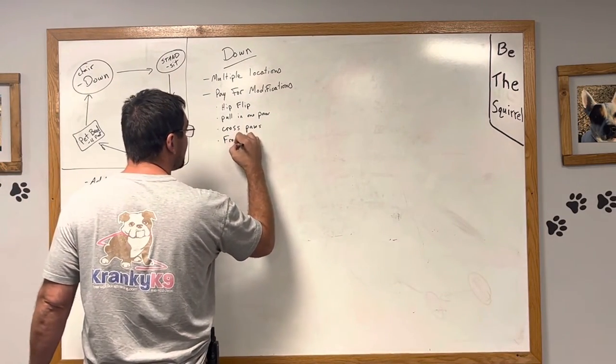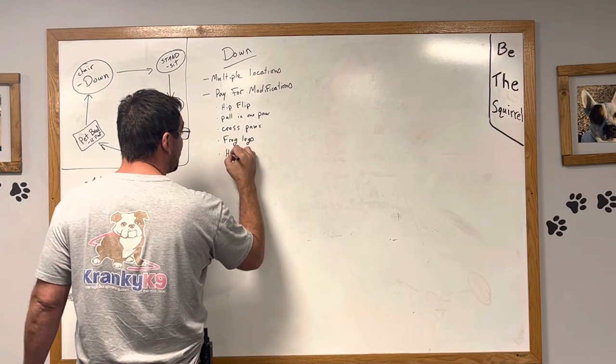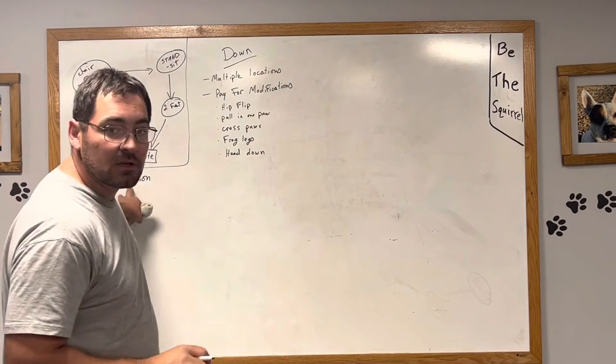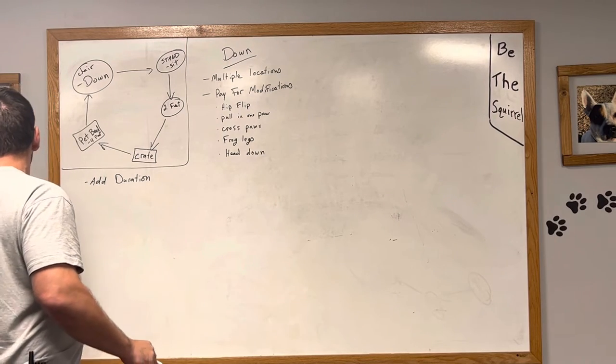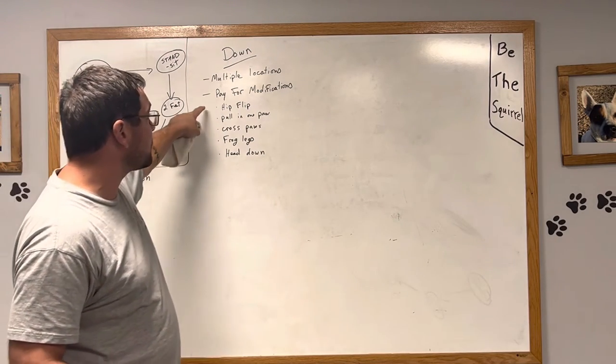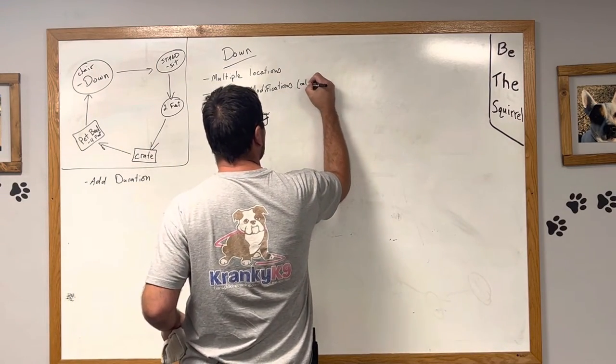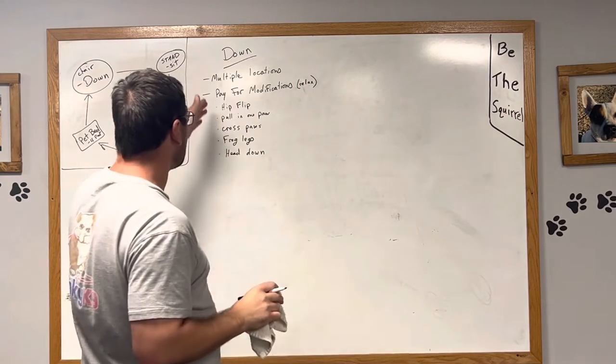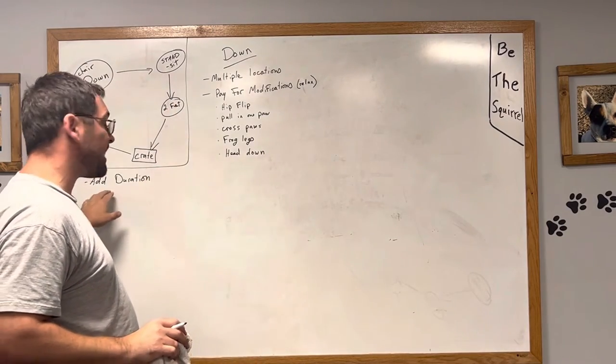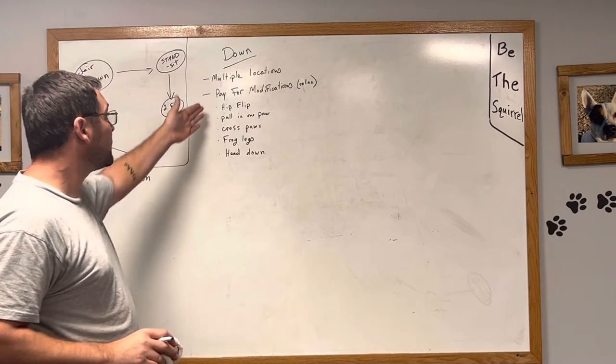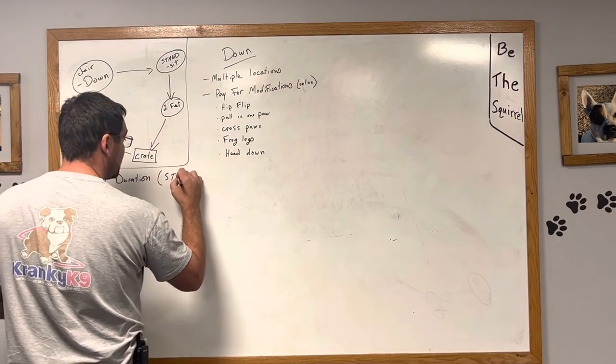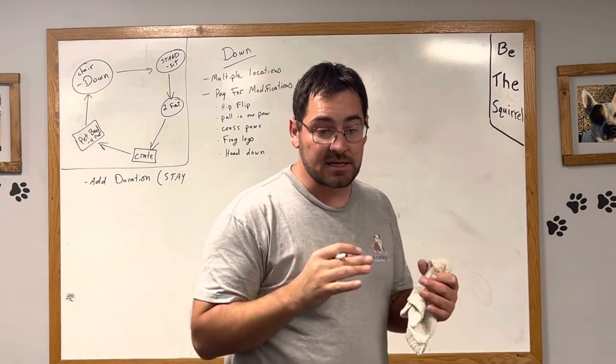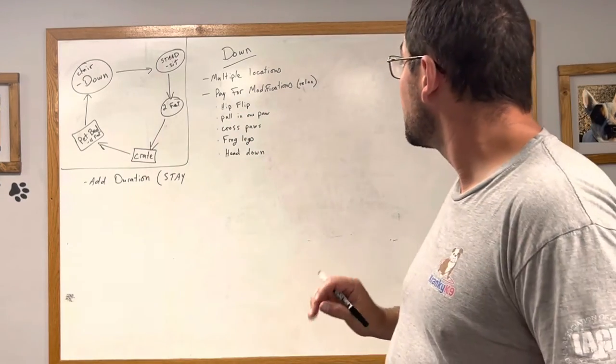The frog leg, where they put their frog legs out, and then head down. The head down is the hardest one to get. Takes the longest. Now the reason why I always add duration, you'll notice that your dogs aren't going to relax into these behaviors until you've added duration. That's why we add duration first. But by the time we're done, we want our pup to stay. We want our pup to relax and also to understand that the cue is us sitting, not necessarily that specific spot. So that's what we're going to do to the down.